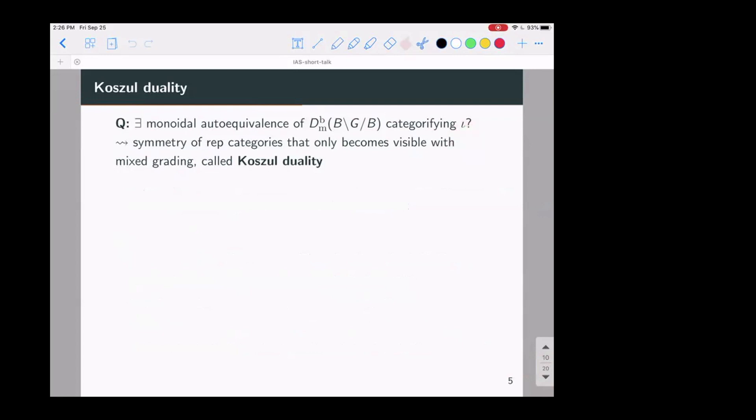And a categorification of a ring involution is an auto equivalence of this category that is monoidal. So it should send the convolution product to the convolution product. So the idea is that just as this ring involution gives you some symmetry of the Weyl group that only becomes visible after deformation. If you had such an equivalence of this category, then it should imply some symmetry of representation category that only becomes visible after turning on the subtle mixed grading. And this kind of phenomenon is called Koszul duality.